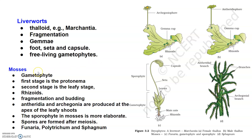In mosses, the predominant stage of the life cycle is the gametophyte — the haploid phase — which consists of two stages. The first stage is called the protonema stage, which develops directly from the spores. It is a creeping, green, frequently filamentous stage. The second stage is the leafy stage, which develops from the secondary protonema and from lateral buds. They are attached to the soil through multicellular structures called rhizoids. Vegetative reproduction in mosses is by fragmentation and budding in the secondary protonema stage, and the sexual reproductive organs — antheridia and archegonia — are produced at the apex of the leafy shoots.